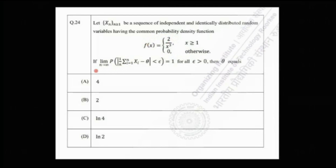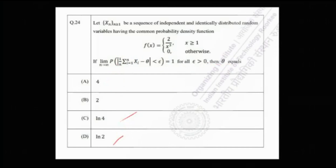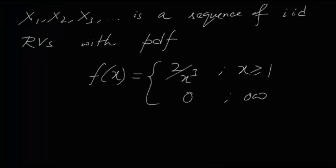If the limit as n tends to infinity of the probability that |( 1/n Σ Xᵢ) − θ| < ε equals 1 for all ε > 0, then what does θ equal? Note that 1/n Σ Xᵢ is simply X̄, the sample mean. There are four options.